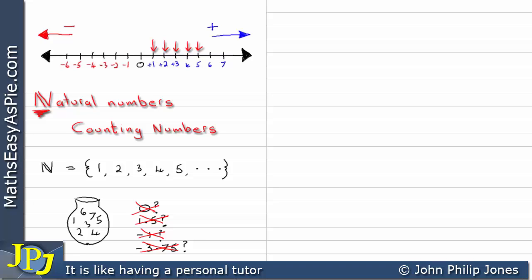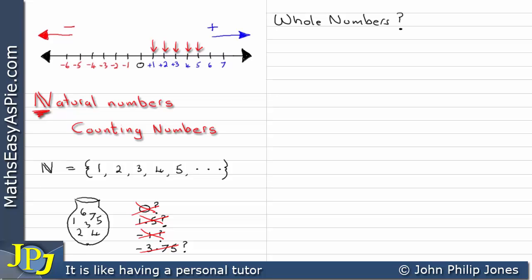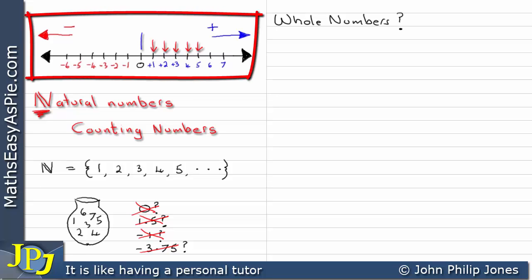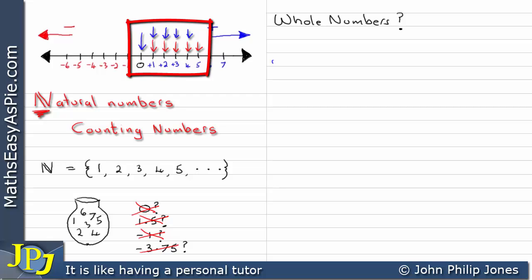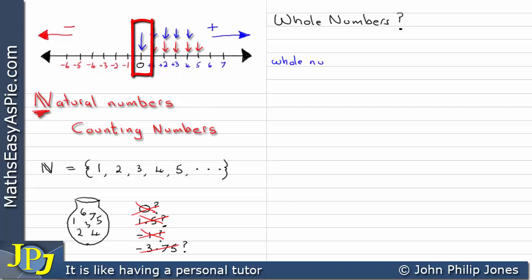What this video is really about is whole numbers. What are whole numbers? Well, if I go back to the number line, whole numbers start at zero. You can see I've got a blue line now pointing to zero, one, two, three, four, and I could point to the five, six, and seven as well. So I'm pointing to all of the whole numbers, which appear to be all of the counting numbers plus zero.